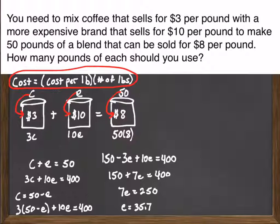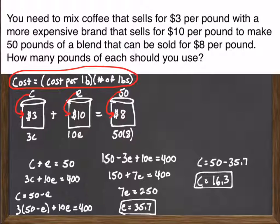I can then plug that back into my equation. C equals 50 minus E and get that I need 14.3 pounds of the cheaper coffee. And this kind of makes sense if you think about it. The $8 that we're trying to get is a lot closer to the $10. So we should be using a lot more of the $10 than we would be of the $3. Because if we used a lot more of the $3, then that would actually put the cost closer to the $3 variety.